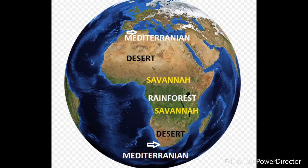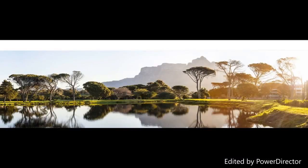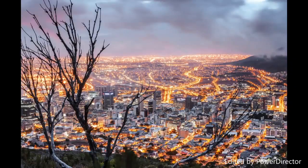Finally, at both the top and bottom of Africa, north and south of the desert regions, there is a small Mediterranean area. This type of climate features hot, dry summers and mild, wet winters. These Mediterranean areas are densely populated. Thank you for watching — please join us again for more videos.